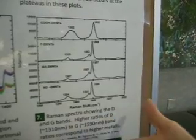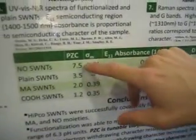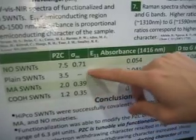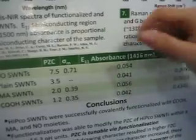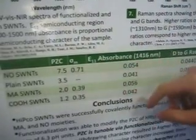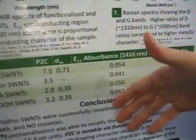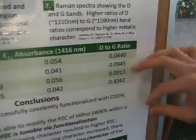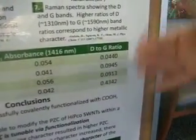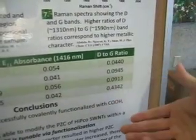That ratio gives us a way of measuring the metallic character of the nanotubes. The results show that, first of all, there were changes in the point of zero charge, and these tracked well with the electron-withdrawing character as measured by the Hammett sigma constant. We were able to find that increasing electron-withdrawing character also caused an increase in the point of zero charge. Likewise, we were able to correlate this with the semiconducting character — we were able to produce samples of increasing semiconducting character by functionalizing them with groups of increased electron-withdrawing character.